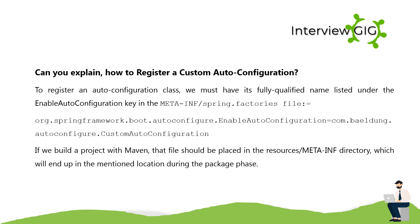Spring Boot auto configuration attempts to automatically configure your Spring application based on the jar dependencies you have added. To register an auto configuration class, you must have its fully qualified name listed under the EnableAutoConfiguration key in the META-INF/spring.factories file, for example: org.springframework.boot.autoconfigure.EnableAutoConfiguration=com.example.autoconfigure.CustomAutoConfiguration. If you build a project with Maven, that file should be placed in the resources/META-INF directory.